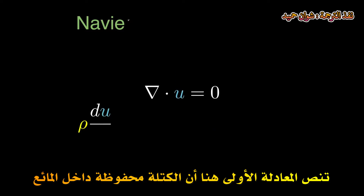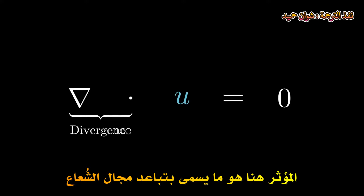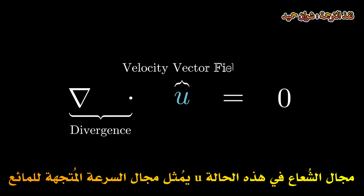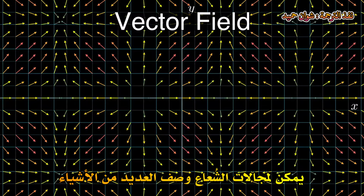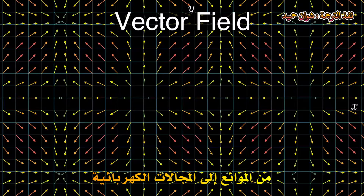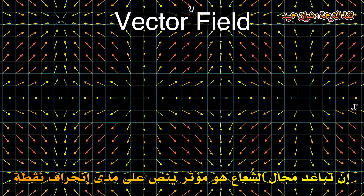This first equation tells us that mass is conserved within the fluid. The operator here is called the divergence of a vector field. The vector field in this case, u, is the velocity vector field of the fluid. A vector field is what you get when you assign every single point in space to a vector. Vector fields can describe many things, from fluids to electric fields to gravitational fields. The divergence of a vector field is an operator that tells us how much a point tends to divert vectors away from it.